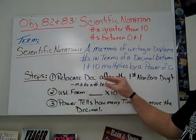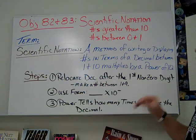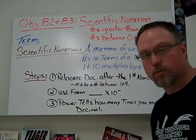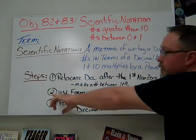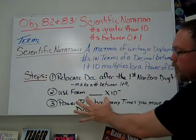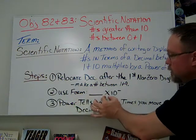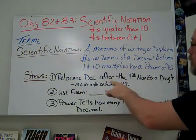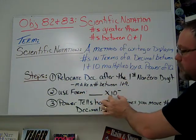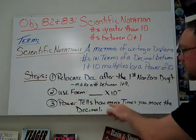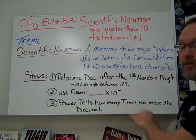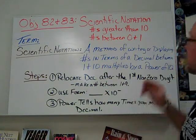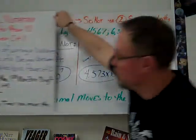The first thing you're going to do is relocate the decimal after the first non-zero digit — basically, you're making a number between 1 and 9. For the second step, you're going to use the form: the number in front times a power of 10. And then the power, which is step 3, tells us how many times you're going to move the decimal. You're going to be moving some decimals, kind of like what we did in the metric system.